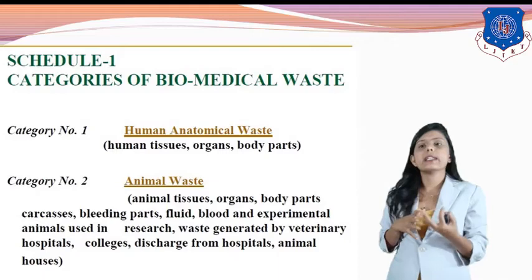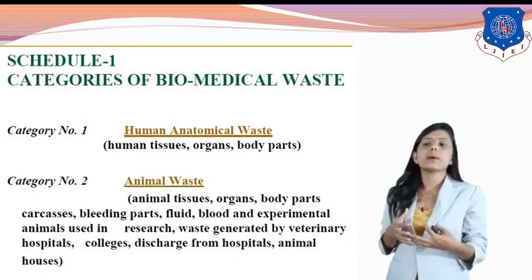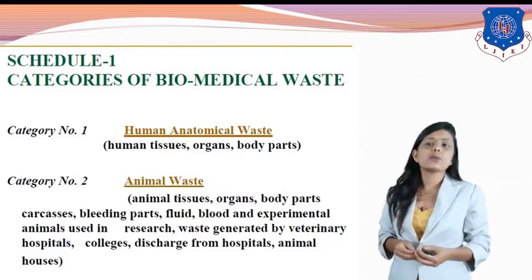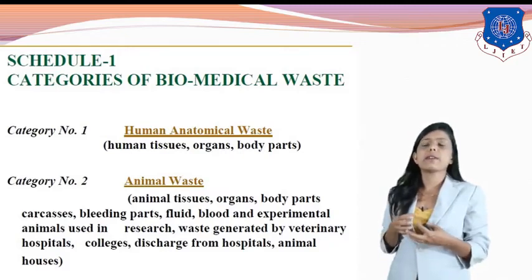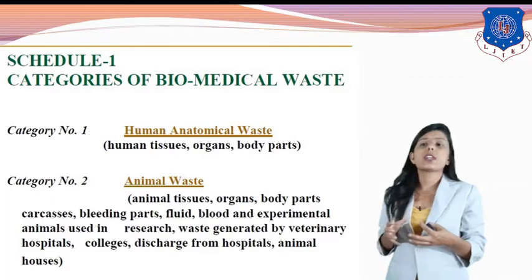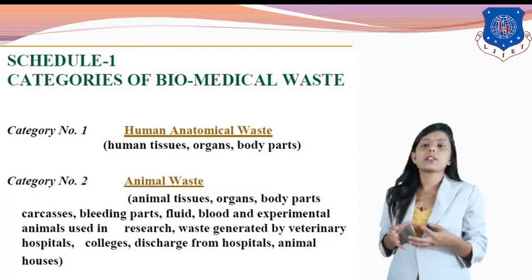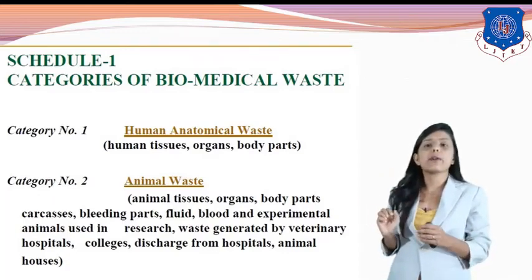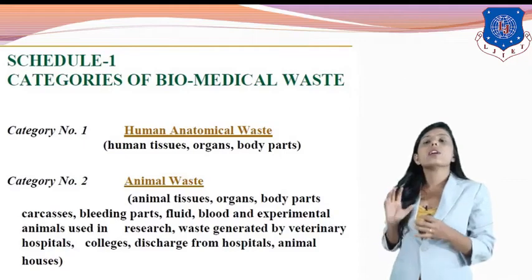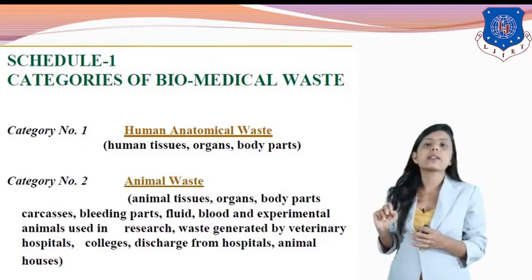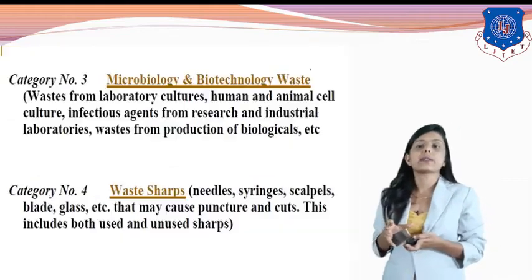The second type of biomedical waste is animal waste: animal tissues, organs, body parts, bleeding parts, fluid, experimental animals used in research, waste generated by veterinary hospitals and colleges, and waste from animal houses. All such animal waste is known as category two type of waste in biomedical waste management.